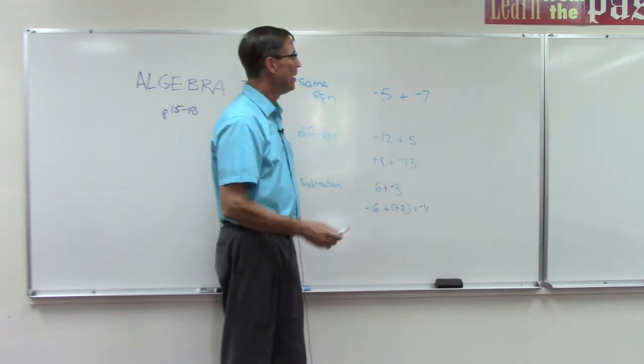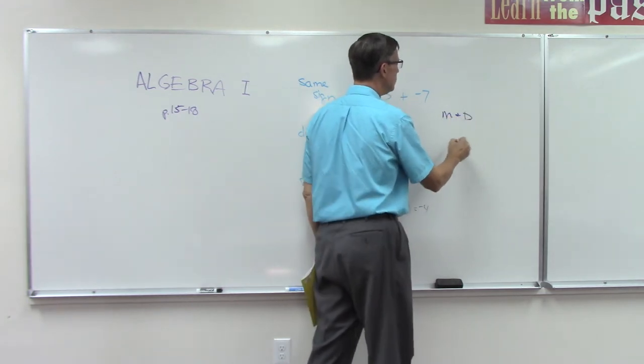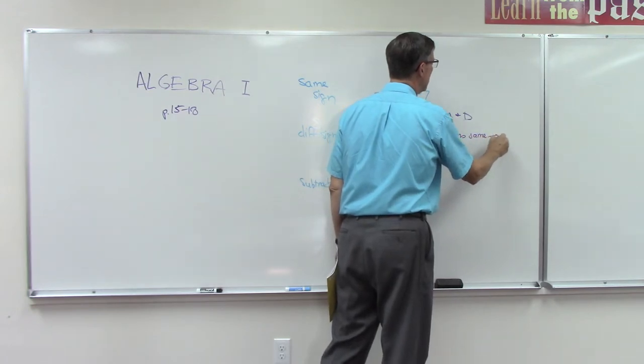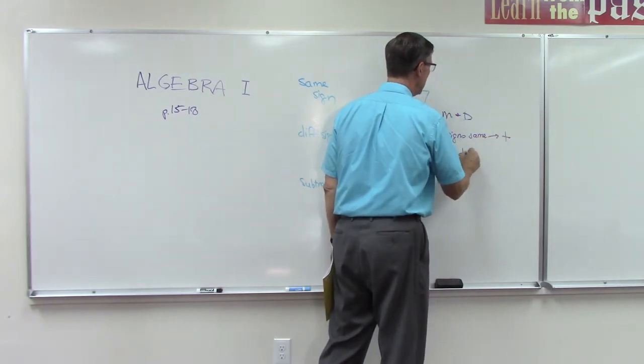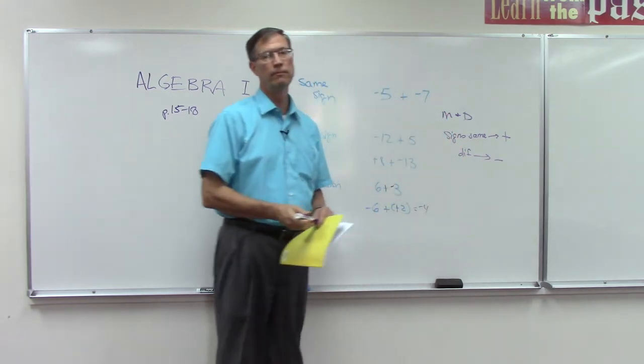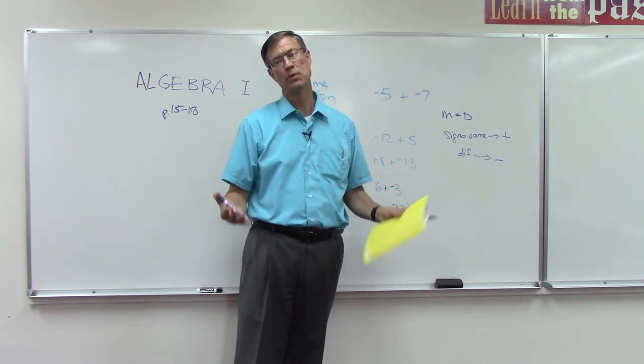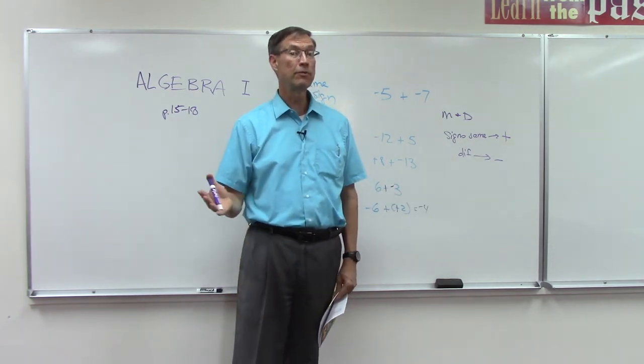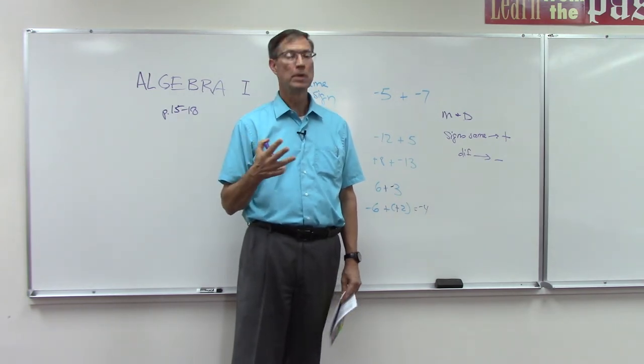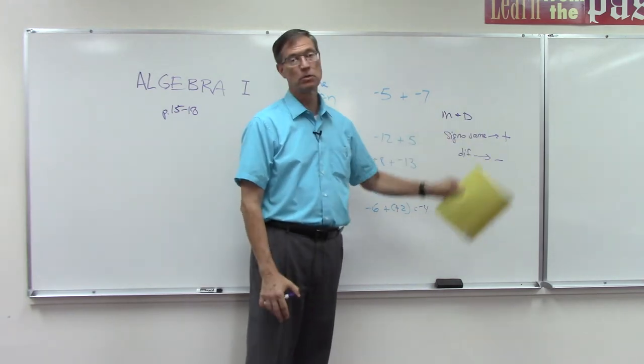And then the rule for multiplying and dividing is really simple. If the signs are the same, the answer is positive. If they're different, the answer is negative. So negative 3 times positive 8, the answer is negative 24. If I had negative 3 times negative 8, they're both negative, so they're both the same, the answer is positive. So if they're the same, if both are the same, the answer is positive.